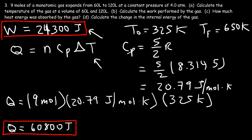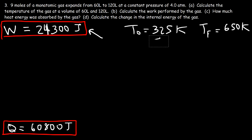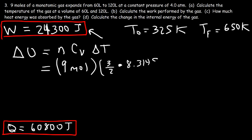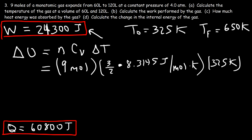Part D: Calculate the change in internal energy of the gas. Using ΔU = n × Cv × ΔT: n = 9, Cv = (3/2)R = (3/2) × 8.3145 joules per mole per Kelvin, and ΔT = 325 Kelvin. So 9 × (3/2) × 8.3145 × 325 = 36,500 joules.